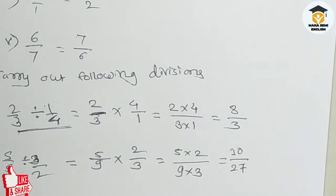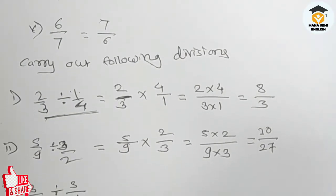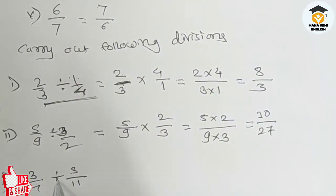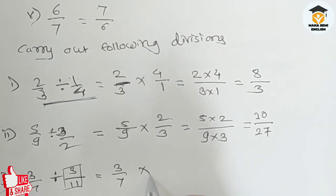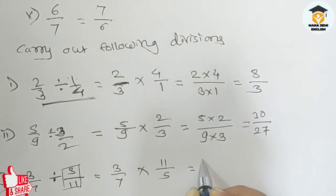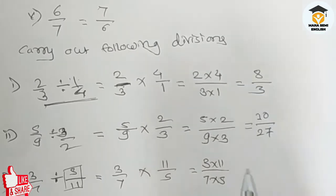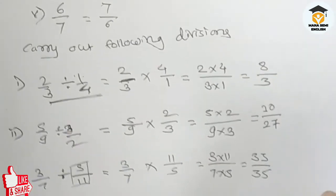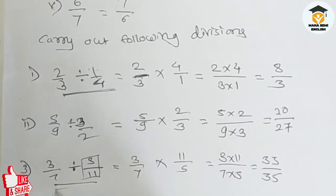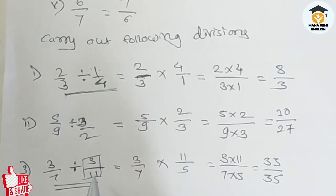The third question is 3 upon 7 divided by 5 upon 11. First, we take the reciprocal of 5 upon 11. The reciprocal is 3 upon 7 into 11 upon 5. Three into eleven divided by seven into five equals thirty-three upon seventy-five. This is the answer of this division.